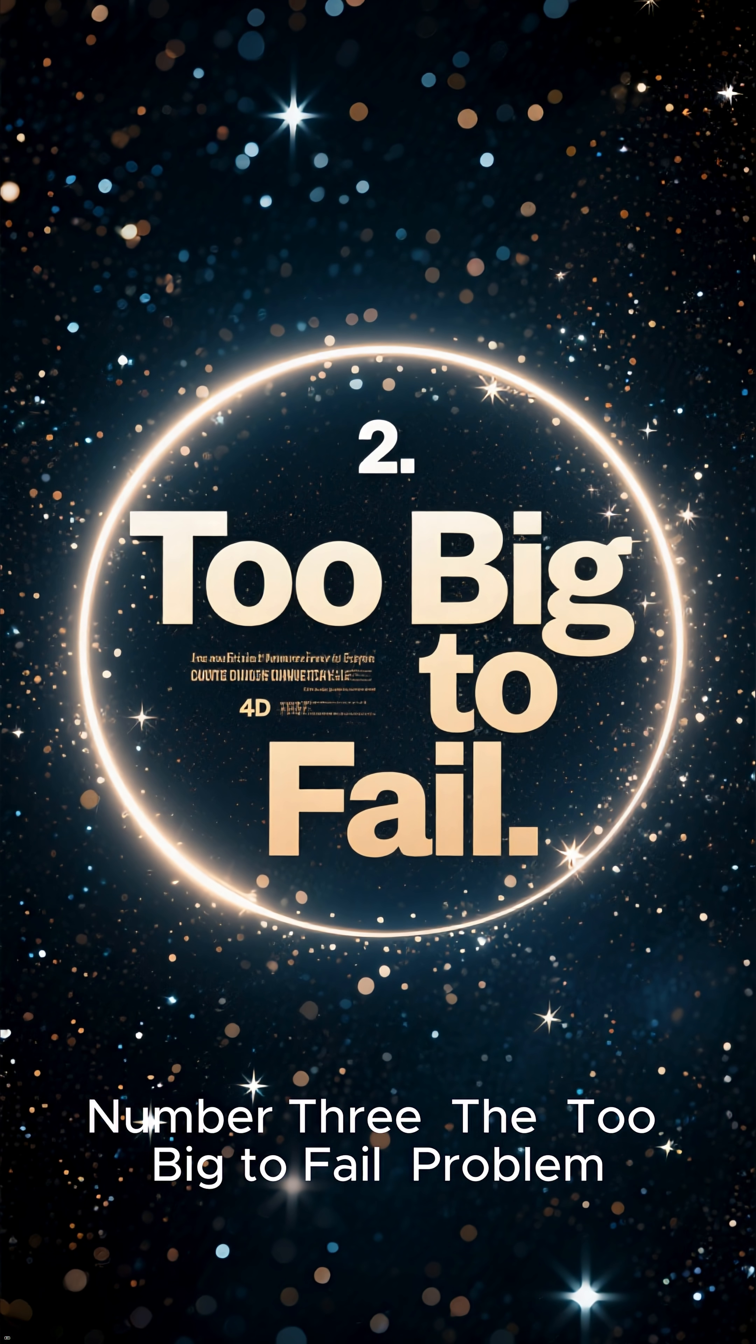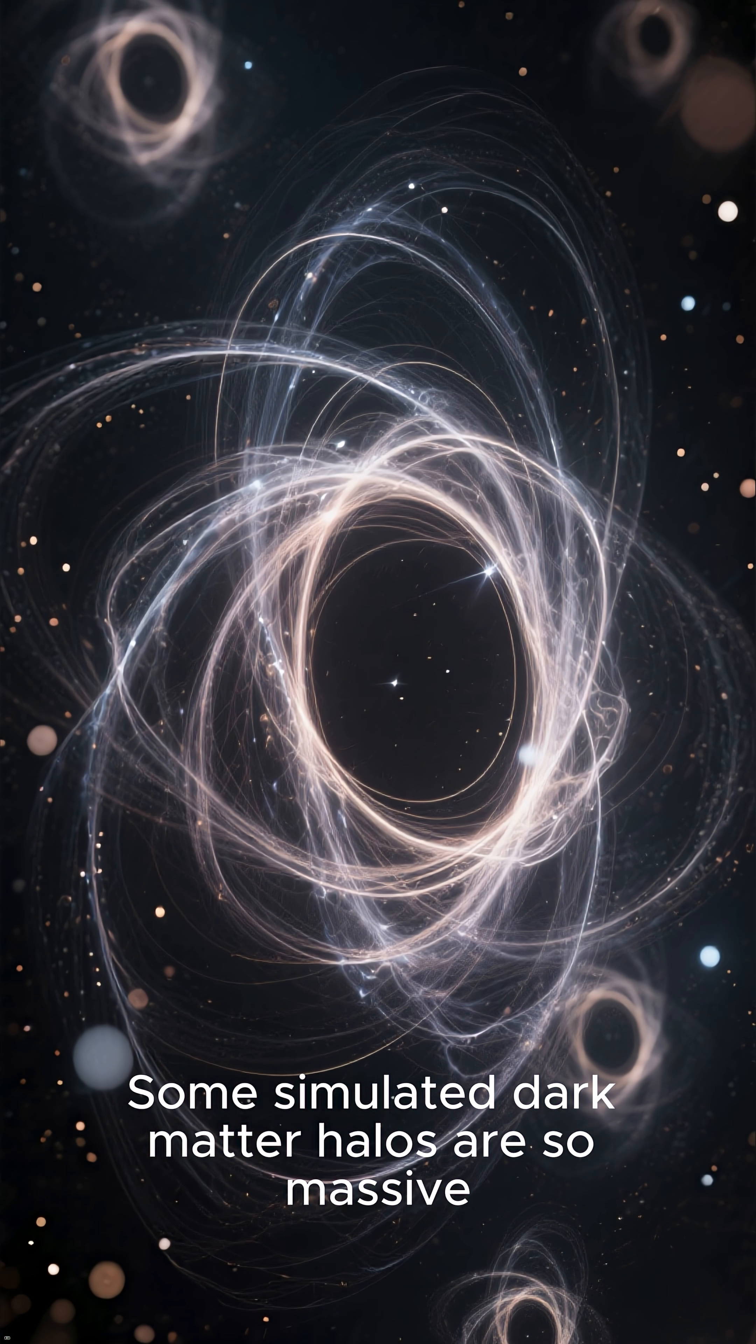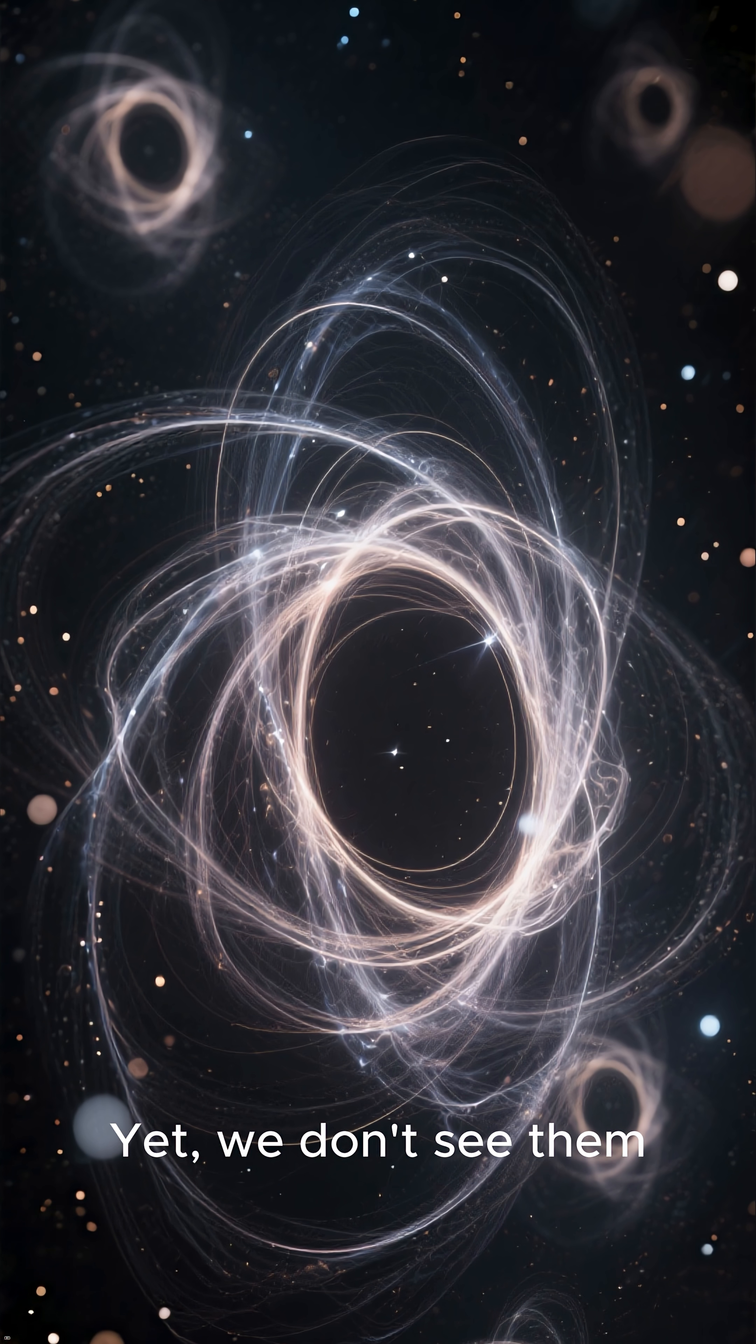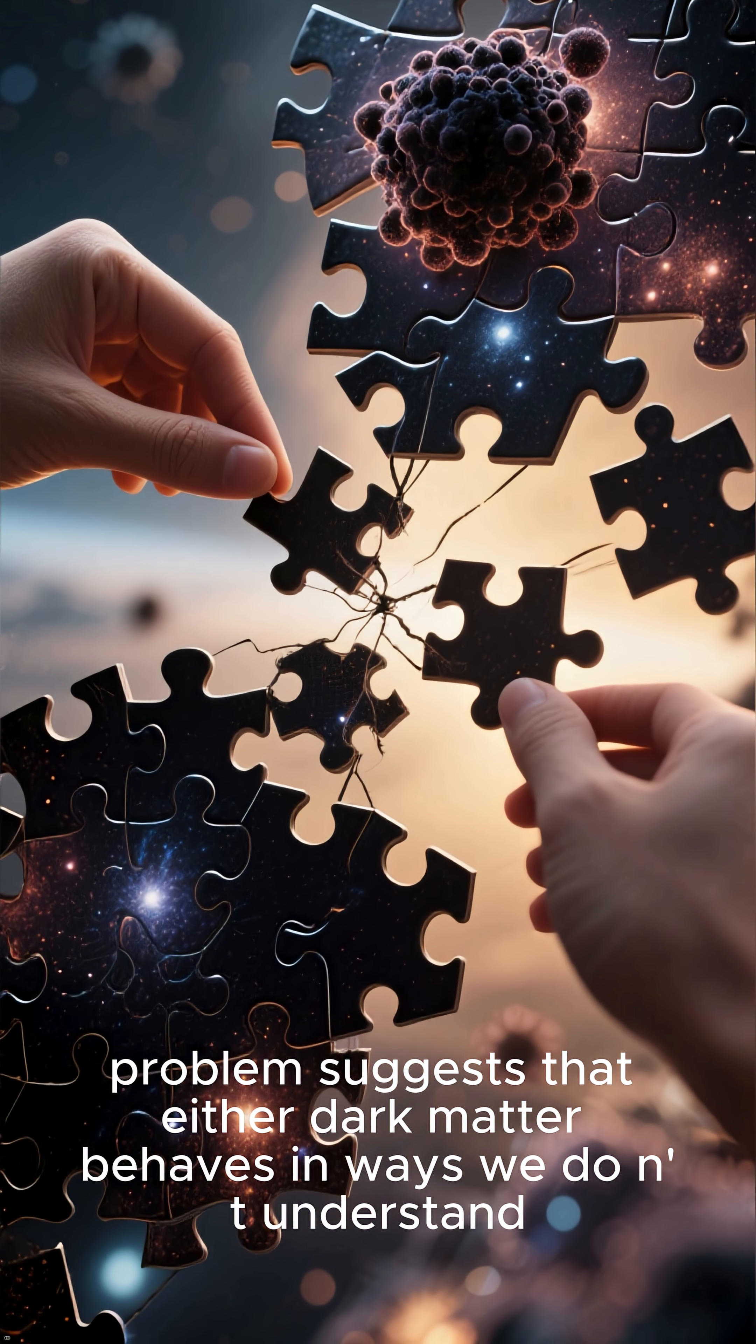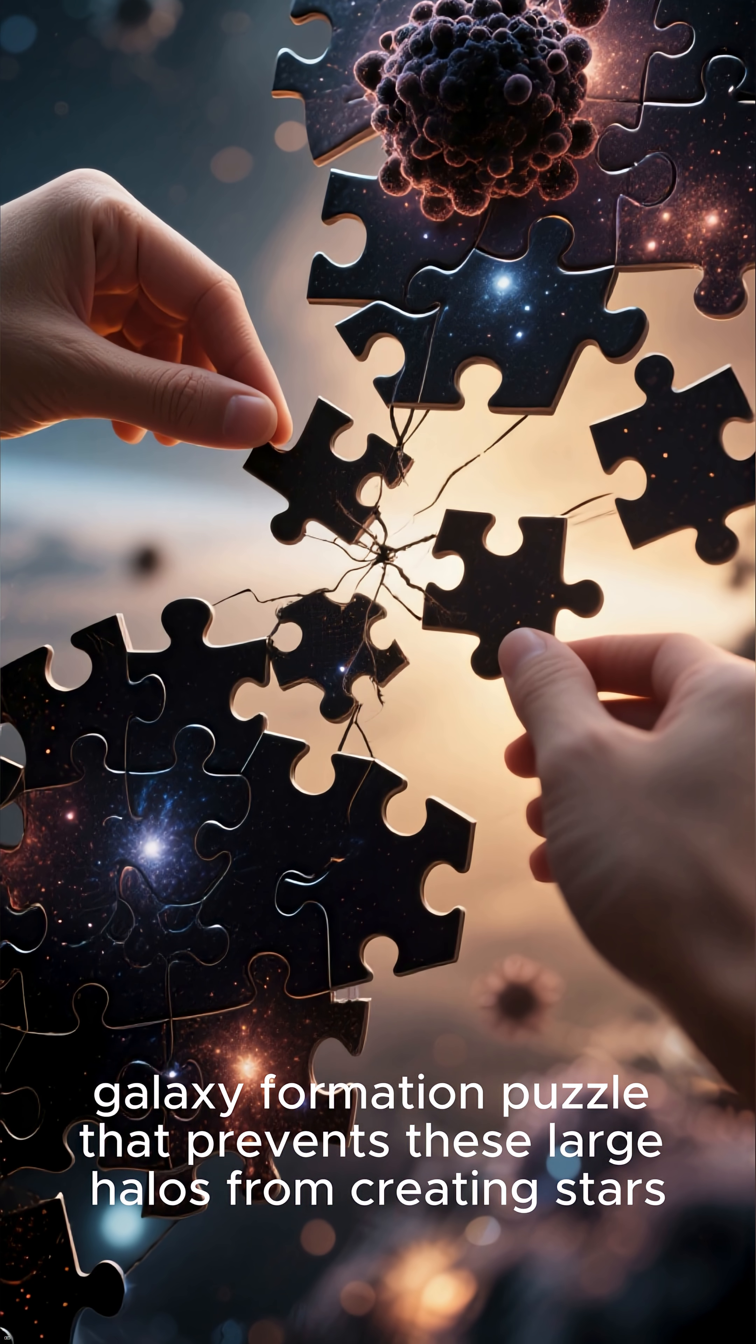Number 3: The Too-Big-To-Fail Problem. Some simulated dark matter halos are so massive that they should have easily formed bright, observable galaxies. Yet we don't see them. This too-big-to-fail problem suggests that either dark matter behaves in ways we do not understand, or there's a missing piece in our galaxy formation puzzle that prevents these large halos from creating stars.